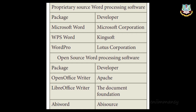Some of the open source word processing softwares are: OpenOffice Writer, which is an open source word processing software; LibreOffice Writer — the developer is the Document Foundation; and another one given in your book is Abhi Word, whose developer is Abhi Source.